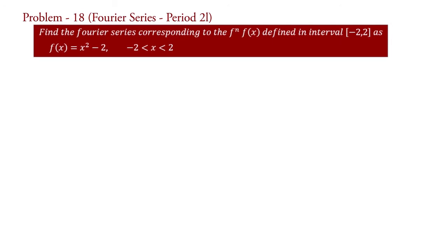The problem is: find the Fourier series corresponding to the function f defined in interval minus 2 to 2 as f equal to x square minus 2 for minus 2 less than x less than 2.